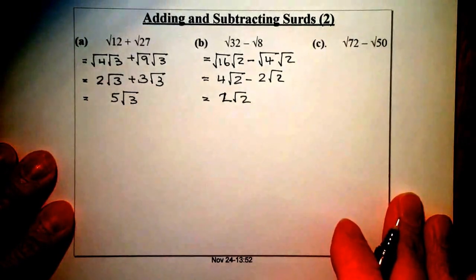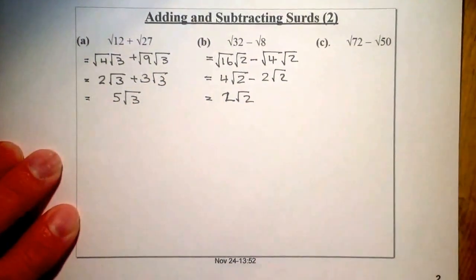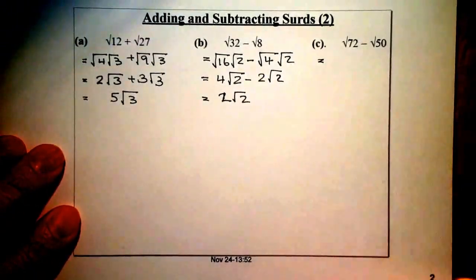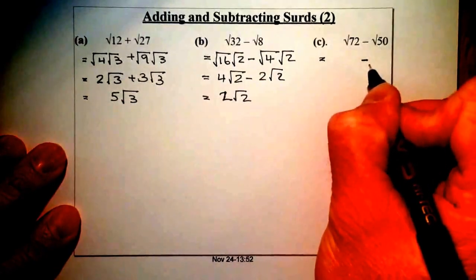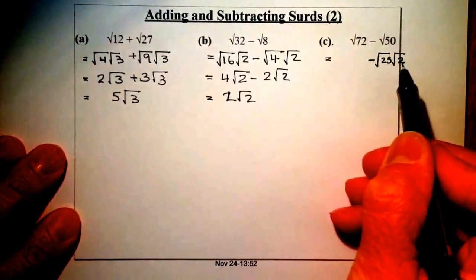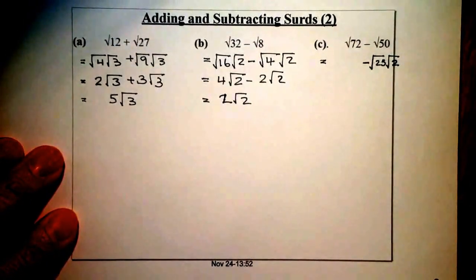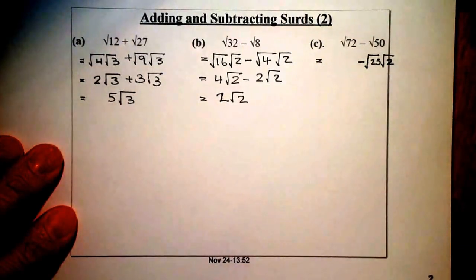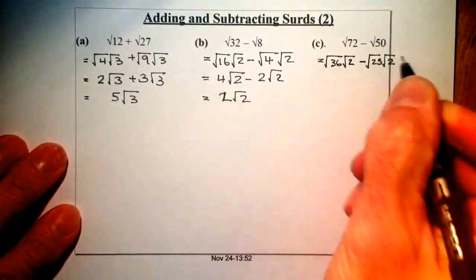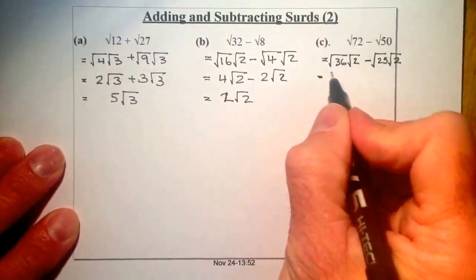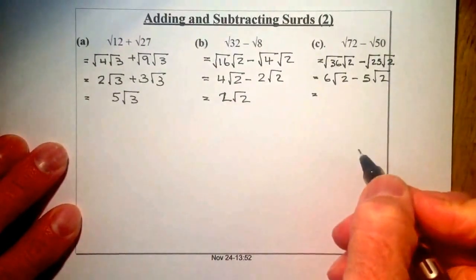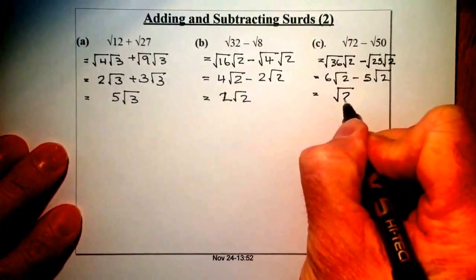Root seventy-two and root fifty. I can see that root fifty can help me — root twenty-five times root two gives me root fifty, which is five root two. For root seventy-two, I think about a factor of two: half of seventy-two is thirty-six, which is a square number. So root thirty-six times root two gives me root seventy-two, which is six root two. So six root two minus five root two leaves just one root two — and usually we don't write the one in front, so the answer is just root two.